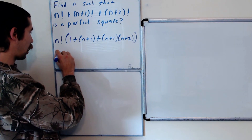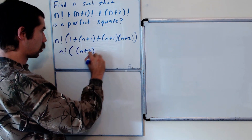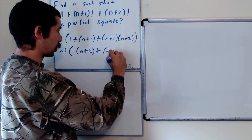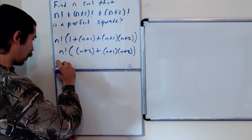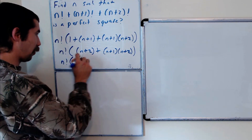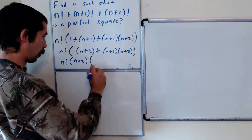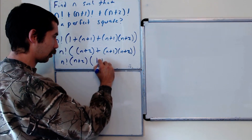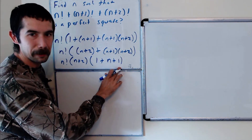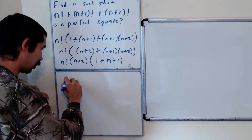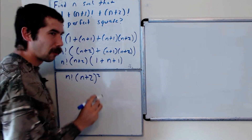This is equal to n factorial times n+2 plus n+1 times n+2. We can factor out an n+2 from this, leaving 1 plus n+1, which is just n+2. So this entire summation is equal to n factorial times n+2 squared.